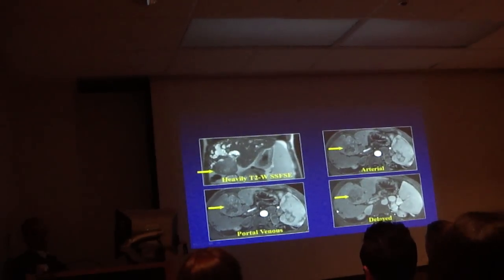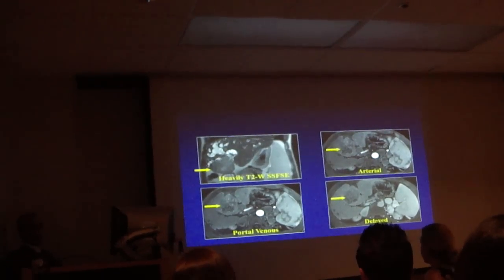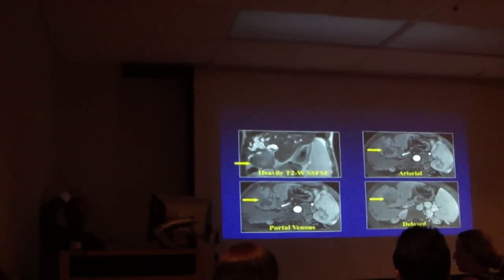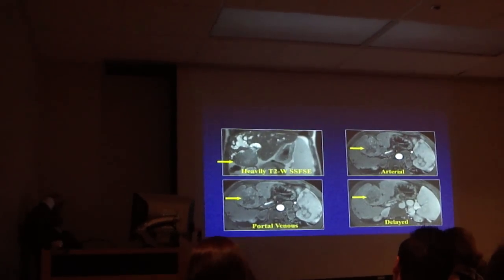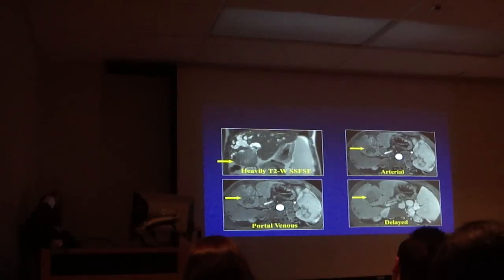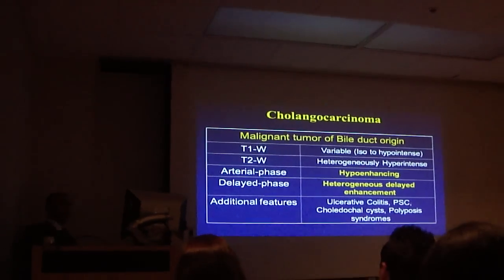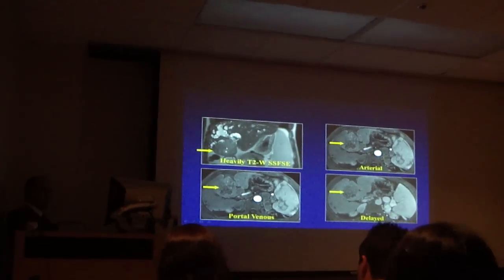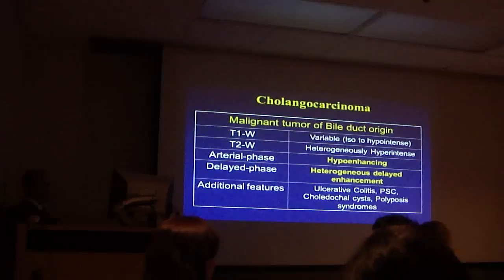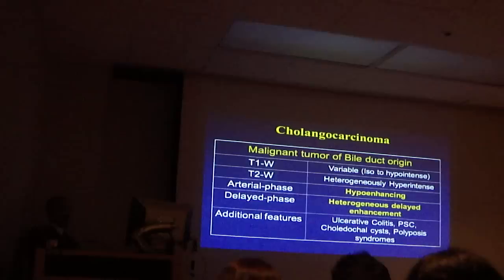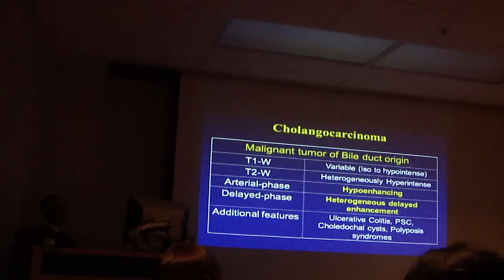What do we think it could be? One of the three worrisome lesions from the initial list — cholangiocarcinoma. A malignant tumor of bile duct origin. That's why I asked what else is going on — you see other lesions as well. T1-weighted: variable, iso to hypo. T2: heterogeneously hyper-intense. Arterial phase: hypo-enhancing. Delayed phase: heterogeneous delayed enhancement. You almost always have a history of ulcerative colitis, PSC, choledochal cyst, or Caroli syndrome.